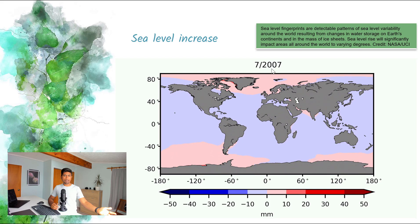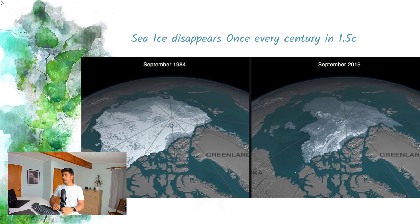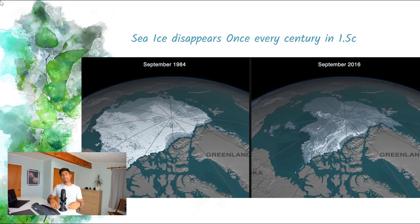We cannot really see the sea level rising directly because it's gradual, but it is happening. Sea ice disappears once every century at 1.5 degrees centigrade, but if it increases to 2 degrees centigrade, it will happen every decade — every 10 years. This will pump a lot of water into the oceans, causing low-lying lands to sink. Many species, and especially human beings, will become like an endangered species as well.